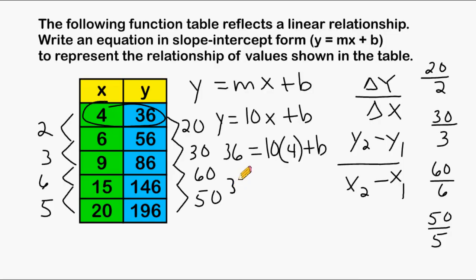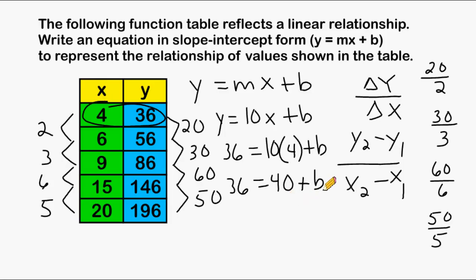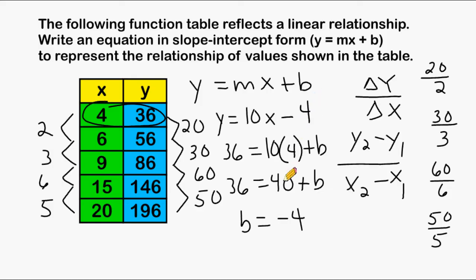We're going to simplify our equation to 36 equals 40 plus b. Now we have to figure out what do we add to 40 to make 36? We have to go backwards from 40 to get to 36, which means we add a negative number. To get to 36 from 40, we go backwards a value of 4, so b must equal negative 4. When you come up with a negative b value, after your x term in the equation, you just write minus that number.